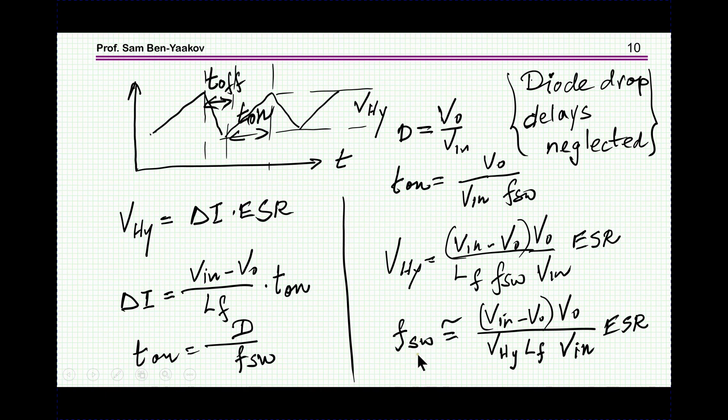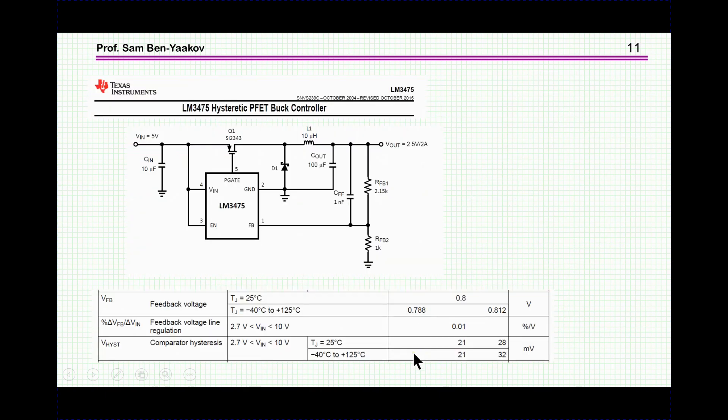And as it turns out there are commercial units that operate like that. Here is a hysteretic controller by Texas Instrument. Again this is an example, other companies also make it. And it is based on a P-channel MOSFET so there is no need for a bootstrap power supply here. Here is the buck and there is a divider because the voltage here, the reference is here, this 0.8.